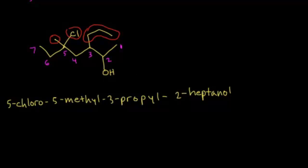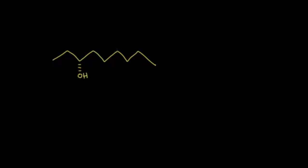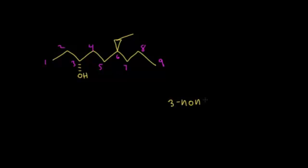Now let's look at a problem that includes stereochemistry. We have a 9-carbon chain with an OH going away from us and another group coming out at us. The longest carbon chain including the OH gives us a 9-carbon alcohol — nonanol. The OH is on carbon 3, so we have 3-nonanol. There is also a 2-carbon ethyl substituent at carbon 6, giving us 6-ethyl-3-nonanol.